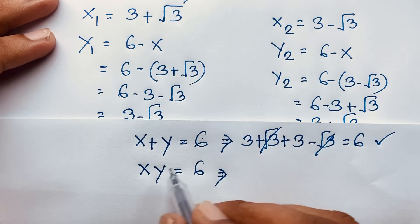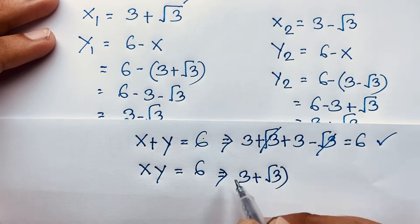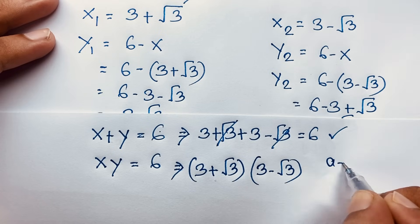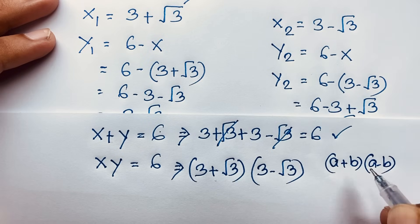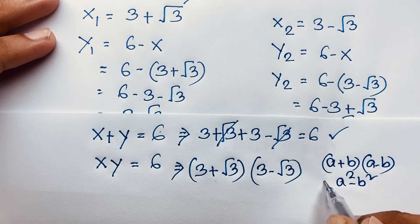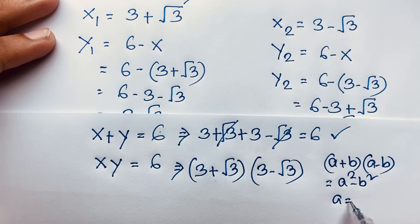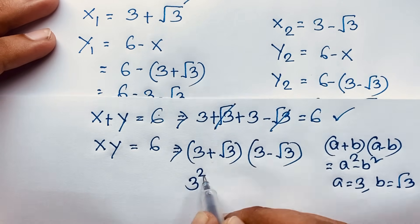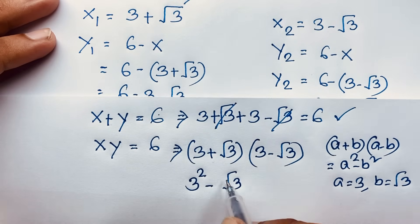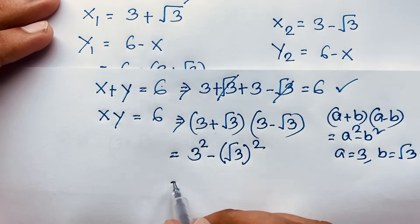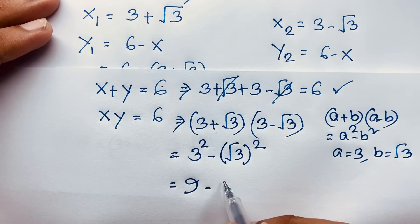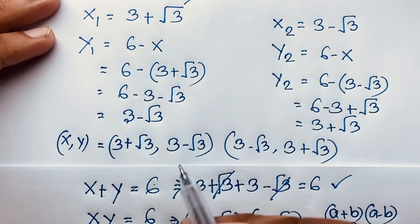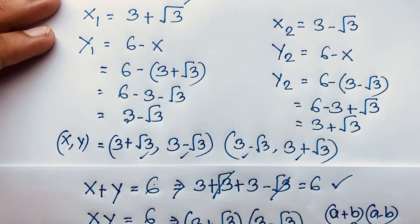Now let's verify x times y is equal to 6. We have (3 plus square root 3) times (3 minus square root 3). According to the identity, a plus b times a minus b equals a squared minus b squared. Here a is equal to 3 and b is equal to square root 3. Applying this formula: 3 squared minus (square root 3) squared equals 9 minus 3, which is 6. So left-hand side and right-hand side are both equal. Therefore (x, y) equals (3 plus root 3, 3 minus root 3) and (3 minus root 3, 3 plus root 3) is our final answer.